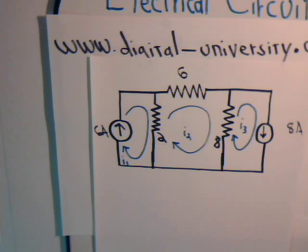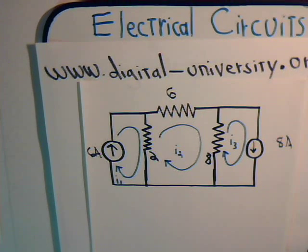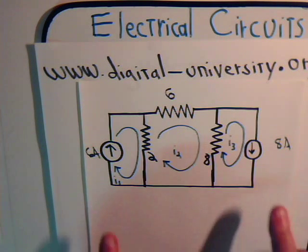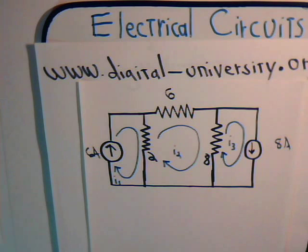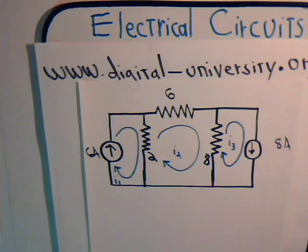This is video 21 from digital-university.org where we're trying to develop different techniques for analyzing electrical circuits. In this problem we're looking at a circuit that has multiple current sources and we want to figure out what is the current flowing through these three resistors here.